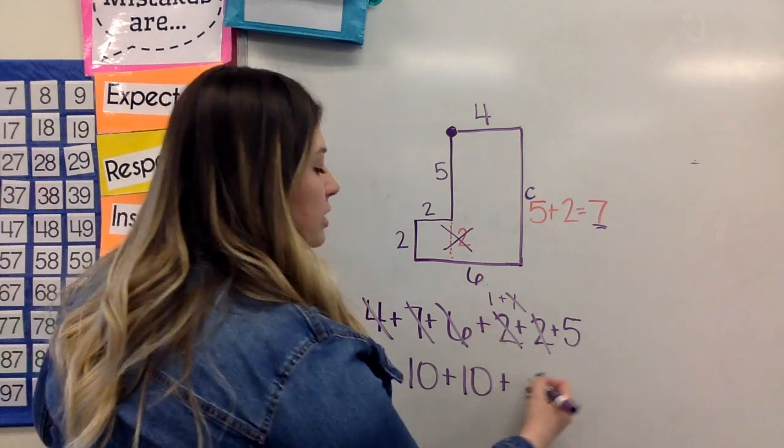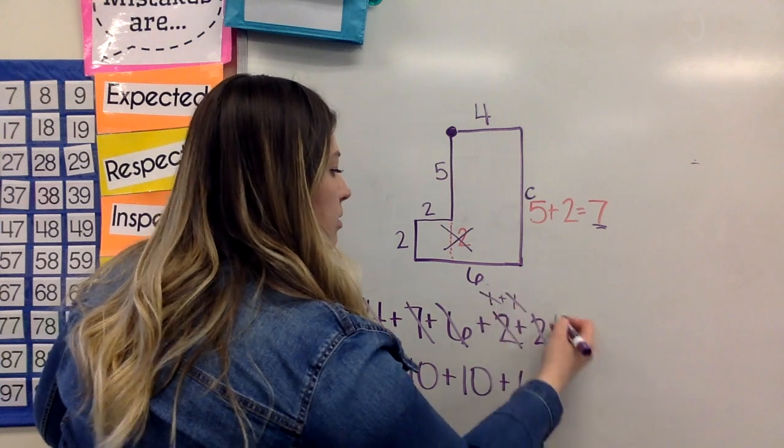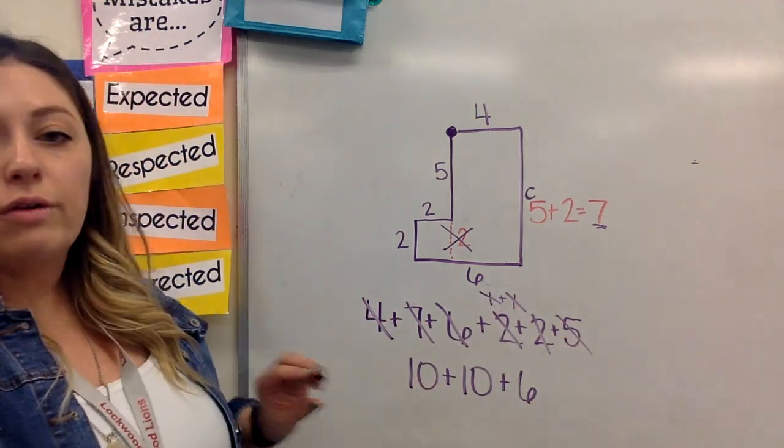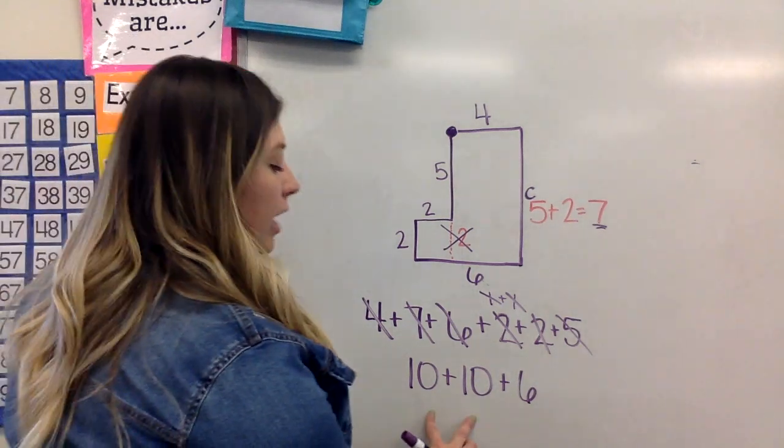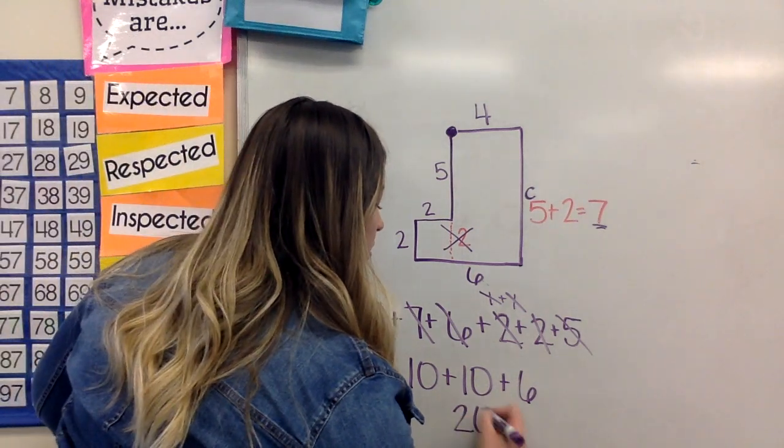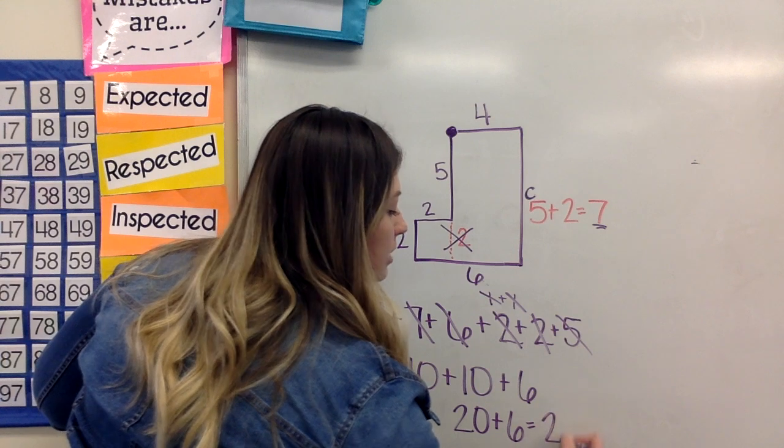Okay, and then I have one plus five, and that's six. So I've used up all my sides, I've grouped it together in friendlier numbers, so it's quicker to add. I know two tens is 20, and 20 plus six is 26.